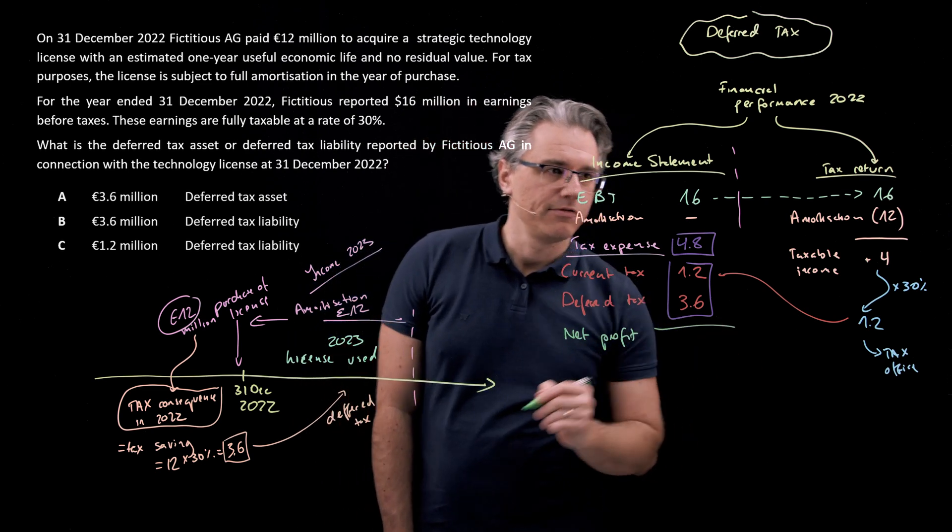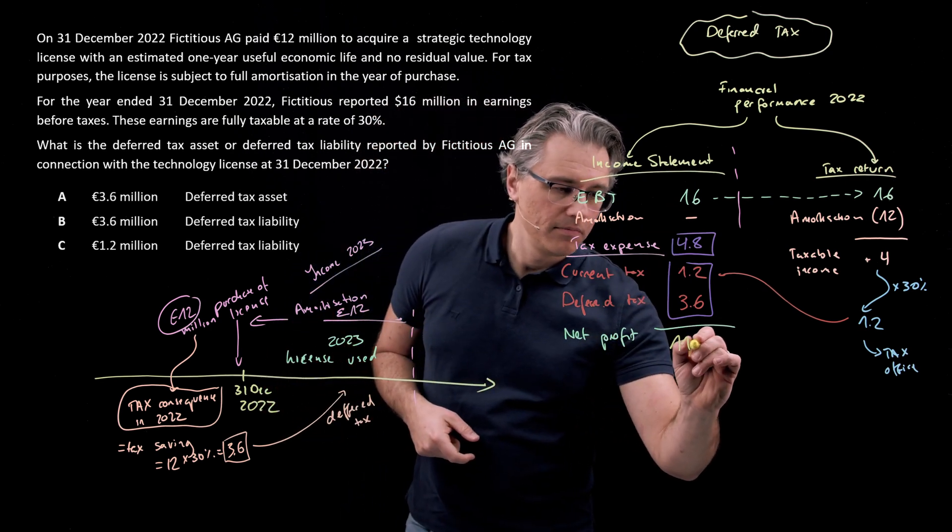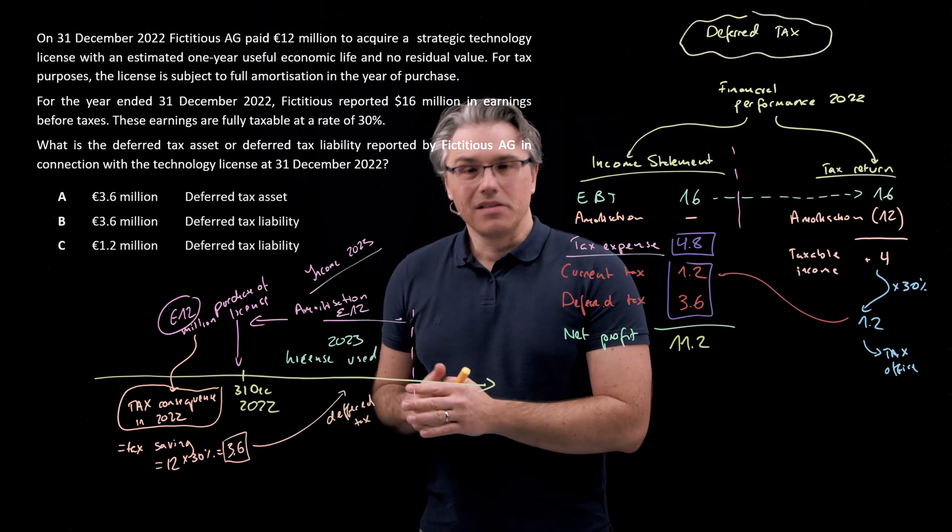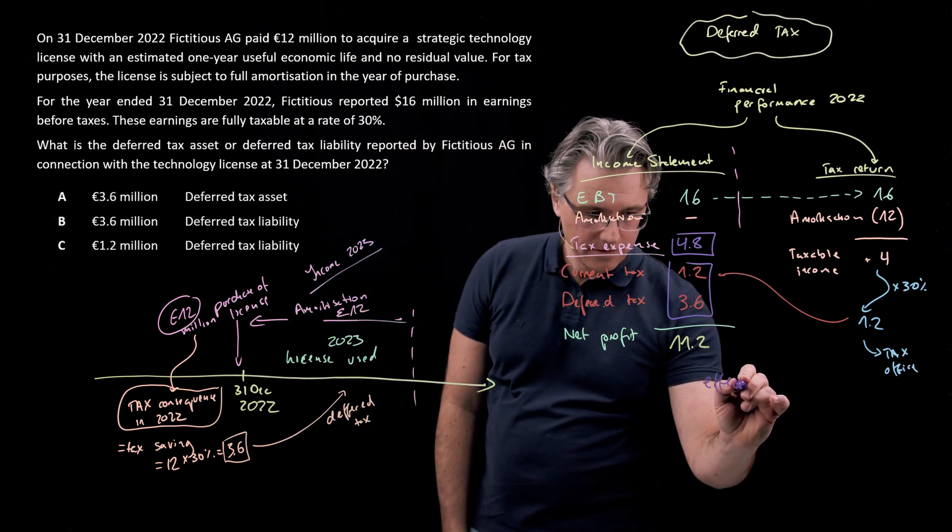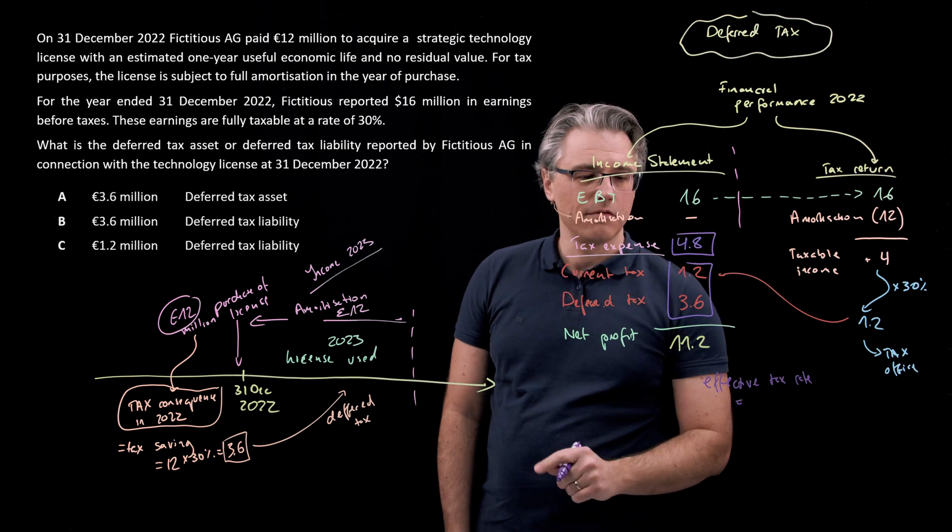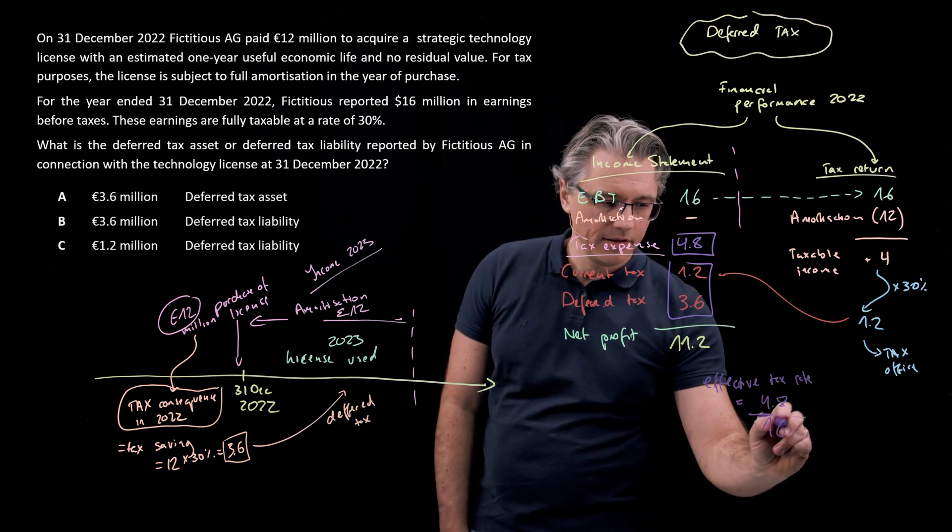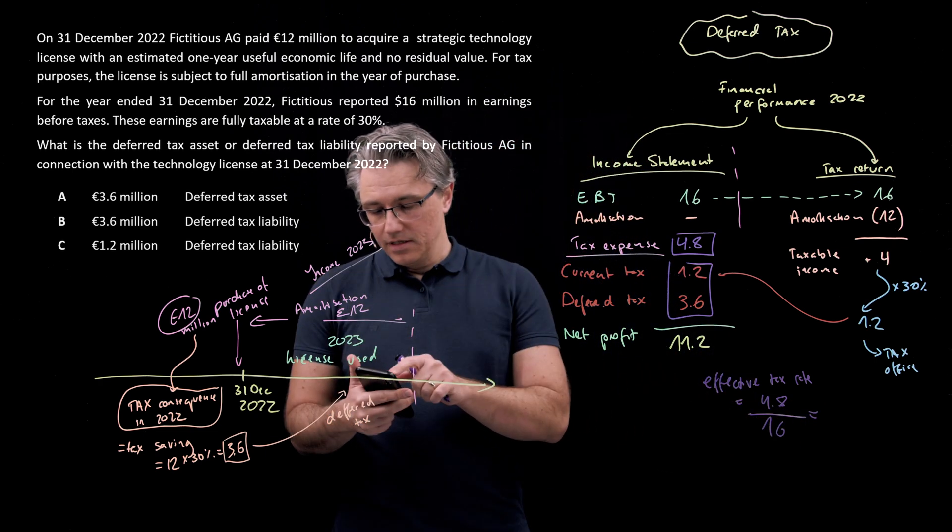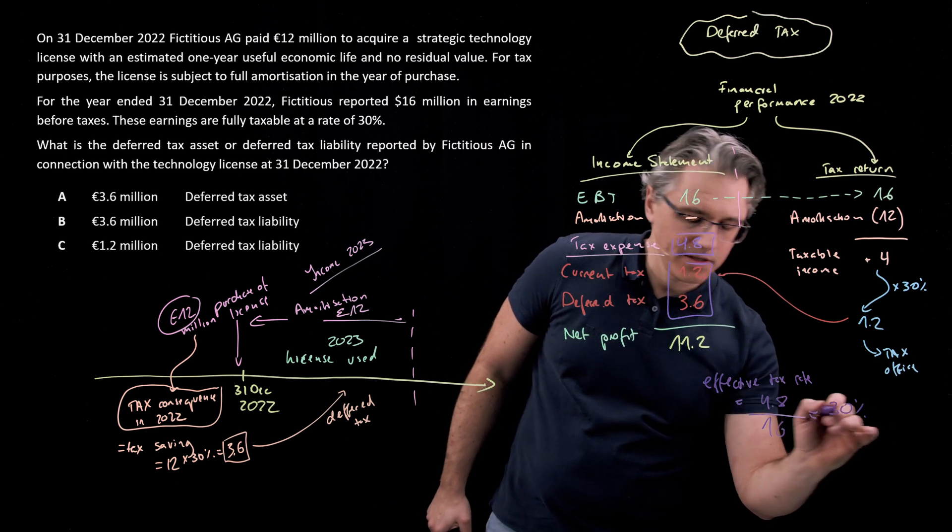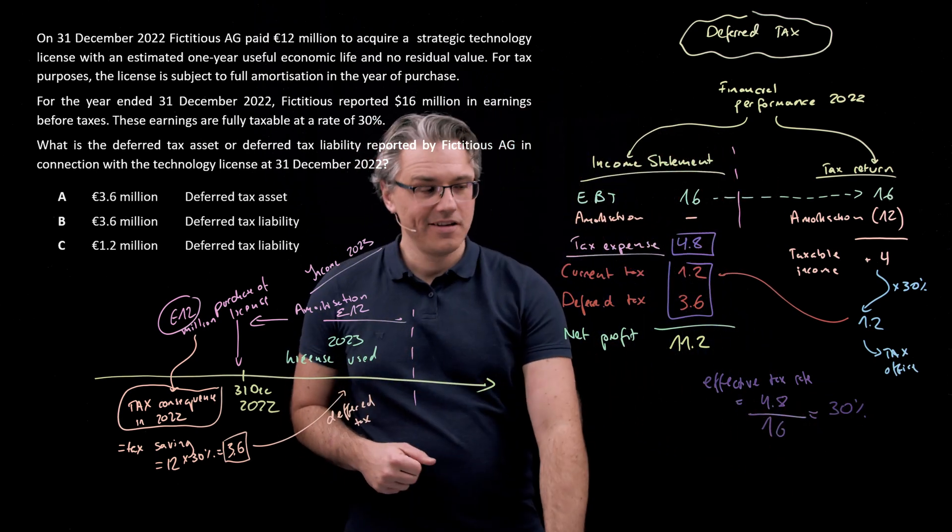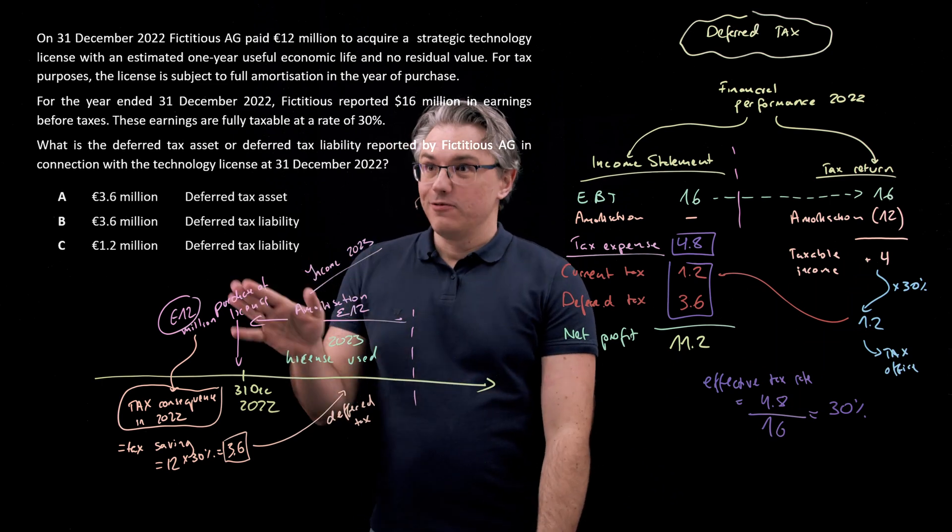And when you compute the net profit for the period, it's going to be 4.8 tax expense deducted from EBT of 16, so that's 16 minus 4.8, 11.2. In keeping with the previous examples, I want to check the effective tax rate here, and this is going to be the relationship of 4.8, the reported tax expense, and 16. 4.8 divided by 16, that's 30 percent. So once again, it's in line with the statutory tax rate, even though 4.8 wasn't the amount of tax payable in respect of the period.